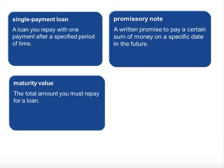These are our vocabulary words — if you need to pause the video to write those down, you may do so. A single payment loan is a loan you repay with one payment after a specified period of time. You'll decide with the lender what your time period is going to be, and you'll both sign what's called a promissory note — a written promise to pay a certain sum of money on a specific date in the future.